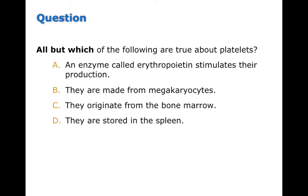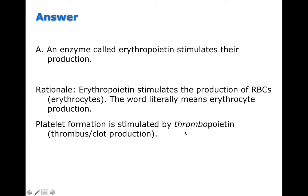Practice question: All but which of the following are true about platelets? A) An enzyme called erythropoietin stimulates their production. B) They're made from megakaryocytes. C) They originate from bone marrow. D) They're stored in the spleen. The false statement is A — erythropoietin stimulates red blood cell production and is released by the kidneys when blood oxygen is low. Platelet formation is stimulated by thrombopoietin, made by the liver, kidneys, and bone marrow.